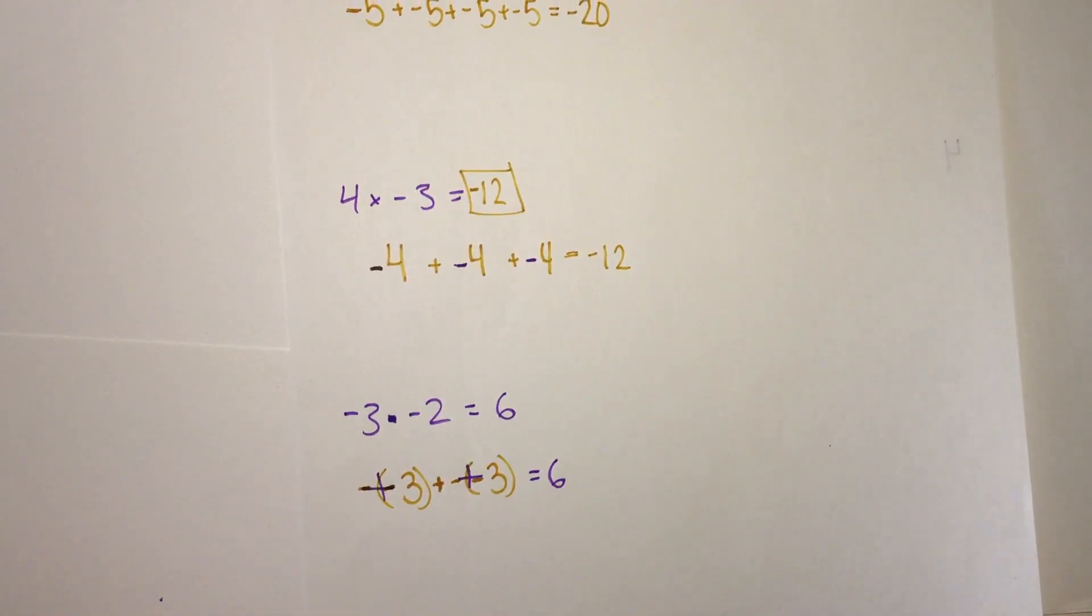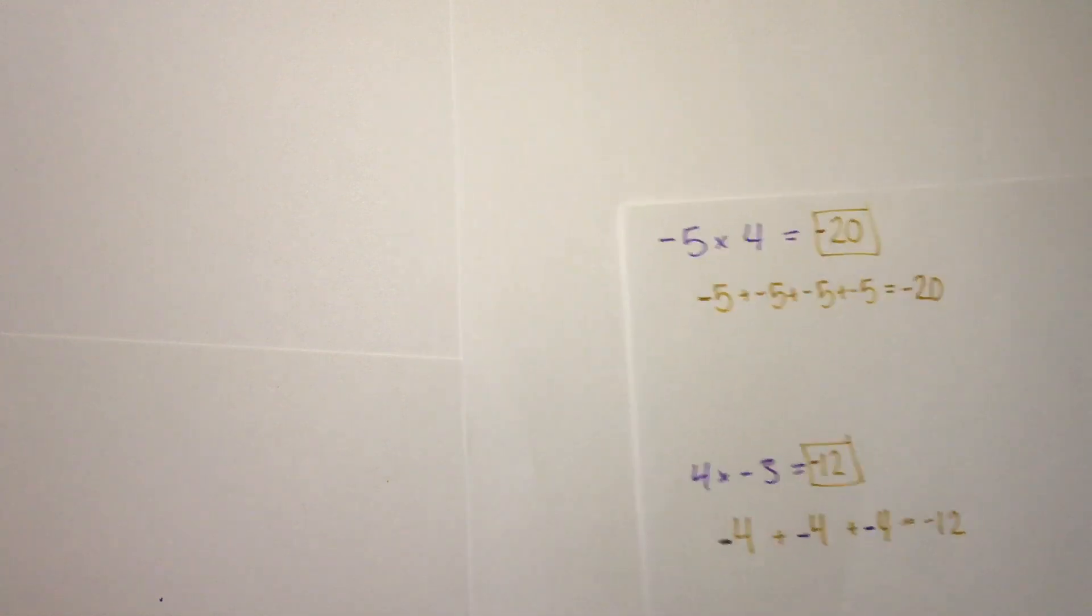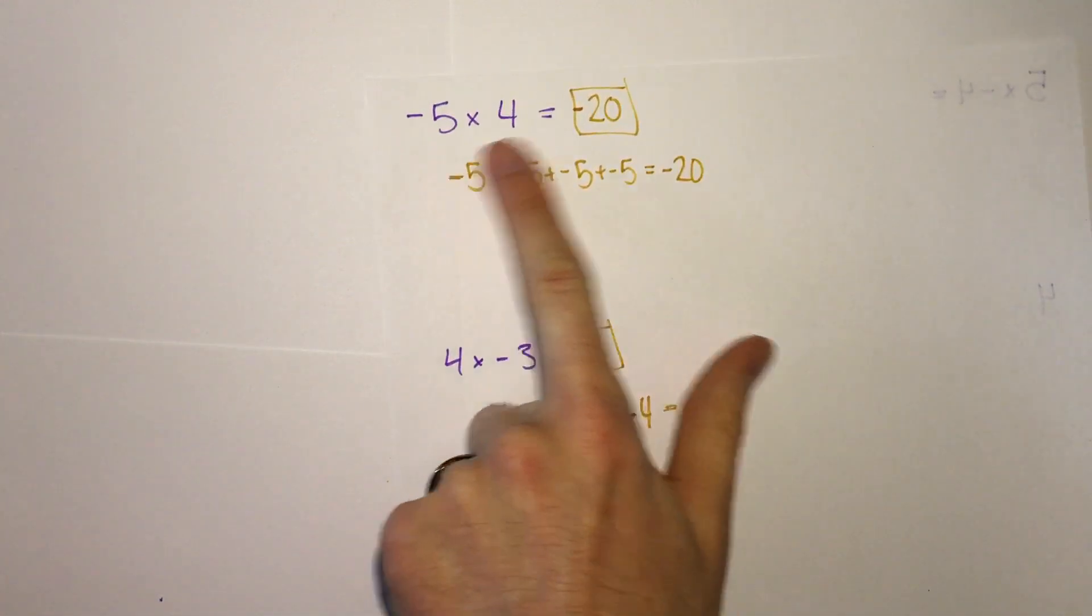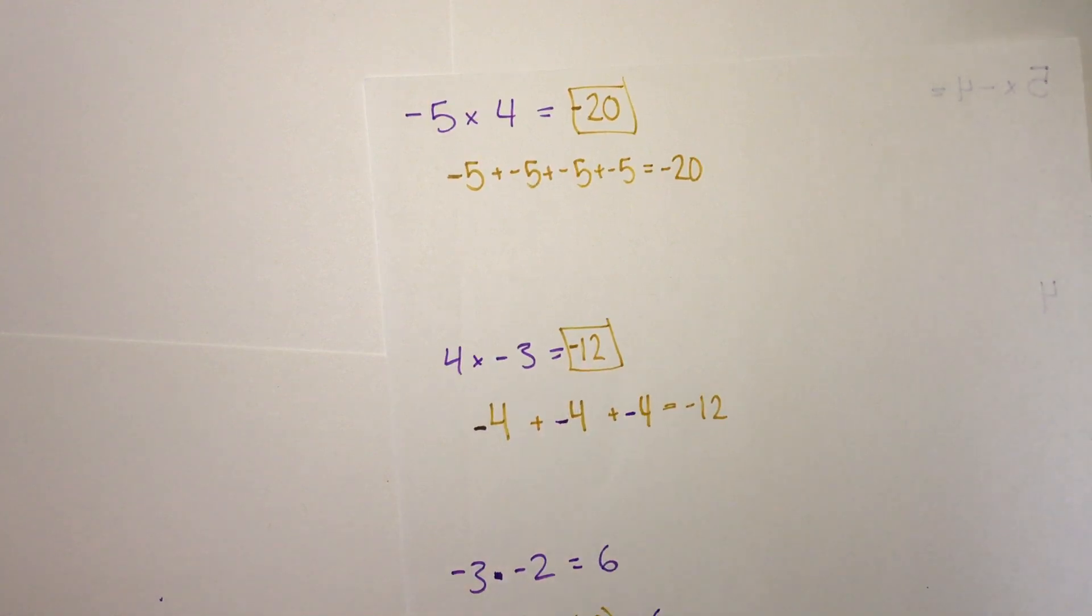This is a pattern that is always going to hold true. Notice negative times a positive is negative, positive times a negative is also negative, and a negative times a negative is positive.